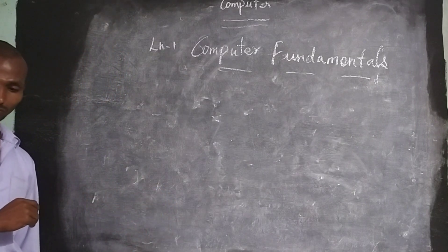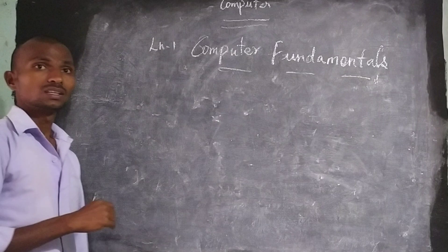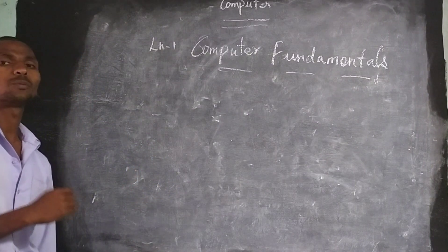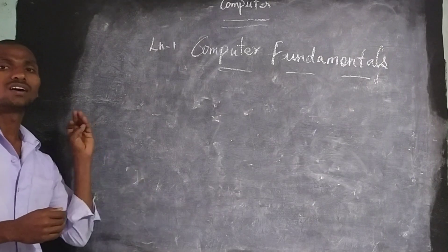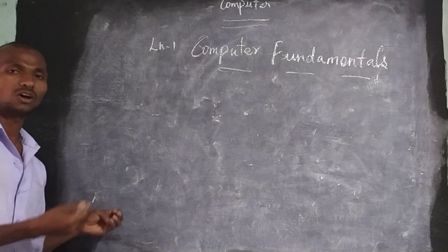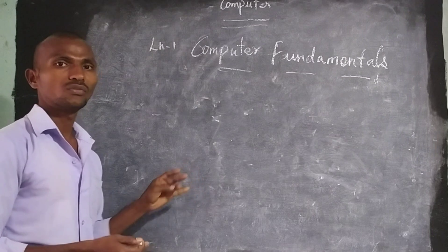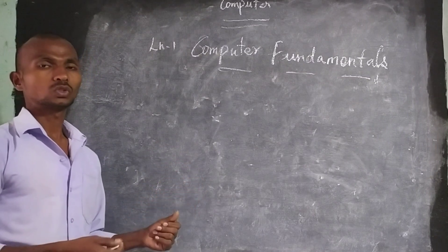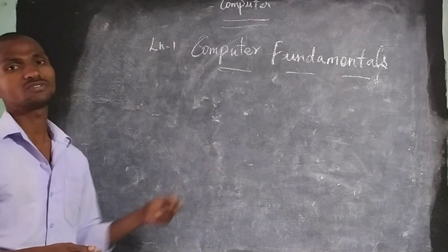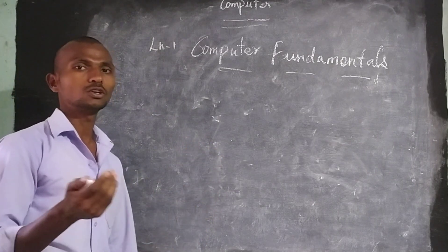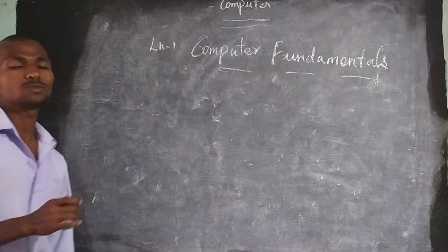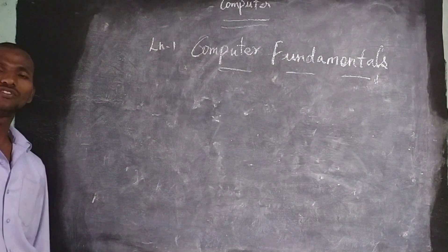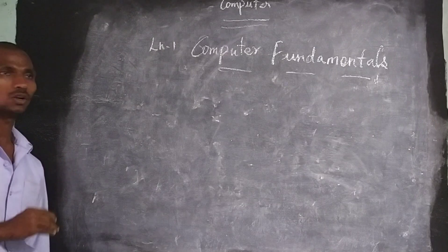With these qualities, we can use the computer each and everywhere. For example, now we are using it in our homes, offices, schools, and for registration. In shops also, they are using the computer for the billing process. So many places we are using the computer.